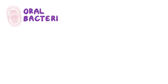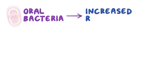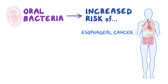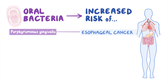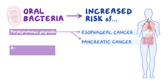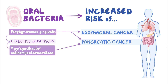Oral bacteria might increase the risk of esophageal cancer, especially Porphyromonas gingivalis, which has been detected in cancerous tissues. P. gingivalis is also associated with a high risk of pancreatic cancer, along with Aggregatibacter actinomycetimcomitans, and they can be used as an effective biosensor for early diagnosis of pancreatic cancer.